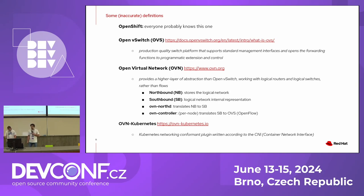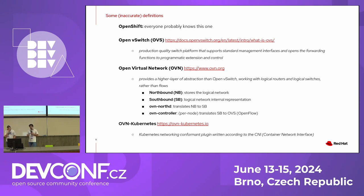Let's start with some definitions. OVS, OpenVSwitch, is a virtual switch used in the data plane. It can be configured by OpenFlow, so by SDN controllers. The SDN controller that the solution uses is OVN, Open Virtual Network. Unlike OVS, OVN doesn't reason in flows or OpenFlows — it reasons in logical concepts: routers, switches, load balancers. You link them together and you get a logical network topology.